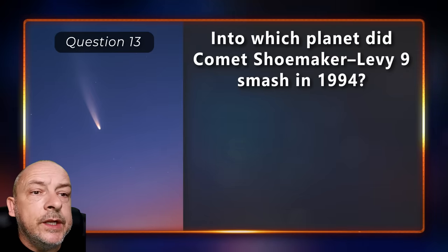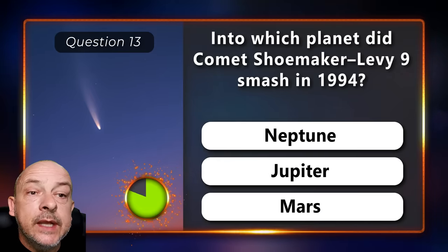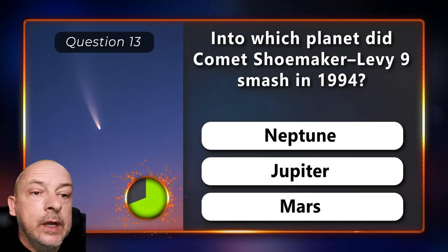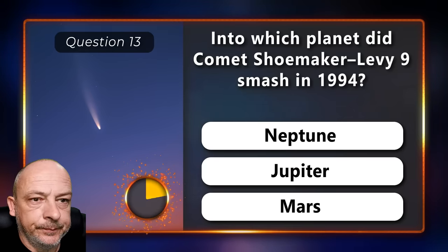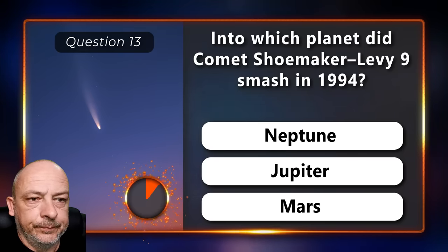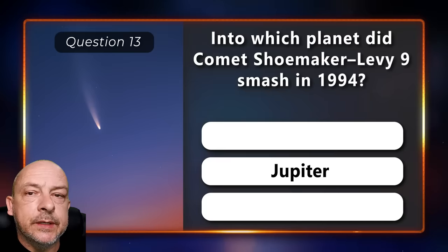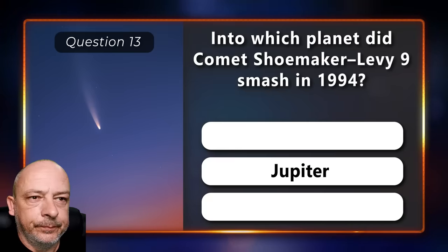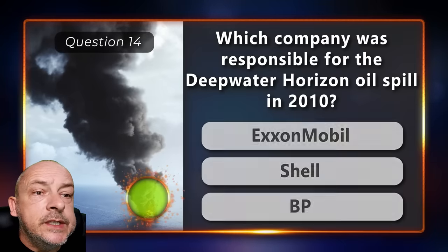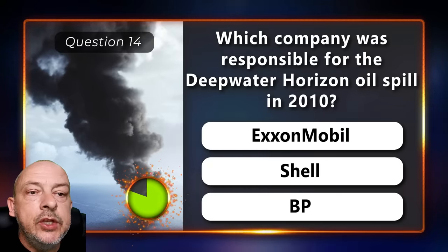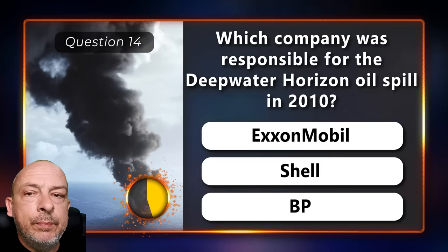Into which planet did Comet Shoemaker-Levy 9 smash in 1994 — Neptune, Jupiter, or Mars? Into Jupiter. Which company was responsible for the Deepwater Horizon oil spill in 2010 — ExxonMobil, Shell, or BP?